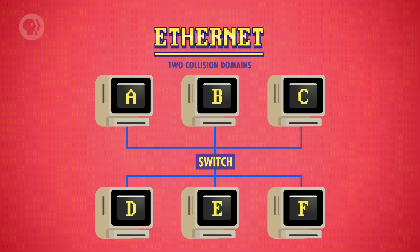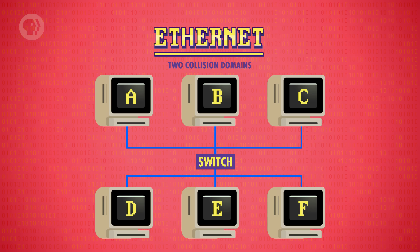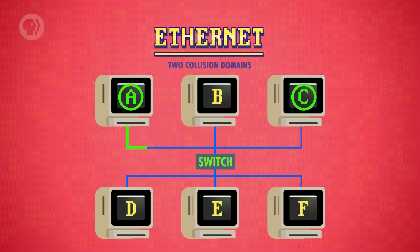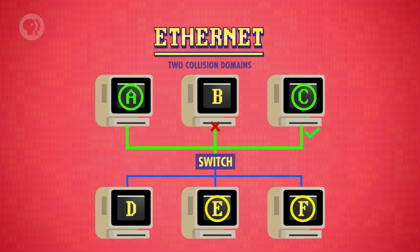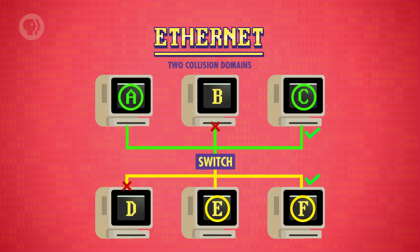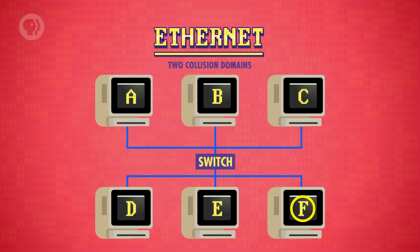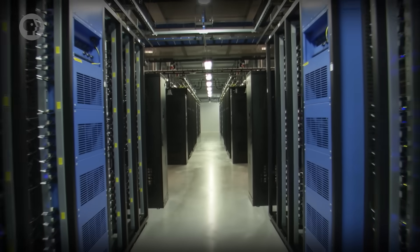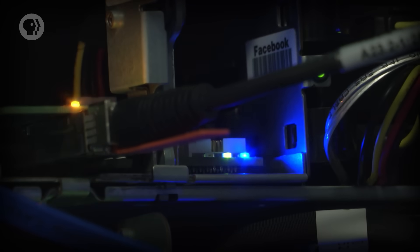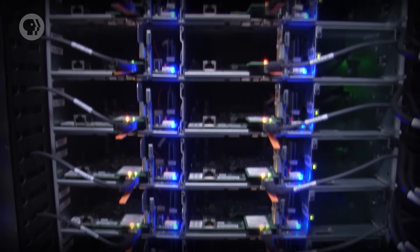The switch sits between two smaller networks, and only passes data between them if necessary. It does this by keeping a list of what MAC addresses are on what side of the network. So if A wants to transmit to C, the switch doesn't forward the data to the other network. This means if E wants to transmit to F at the same time, the network is wide open, and two transmissions can happen at once. But if F wants to send data to A, then the switch passes it through, and the two networks are both briefly occupied. This is essentially how big computer networks are constructed, including the biggest one of all — the Internet — which literally interconnects a bunch of smaller networks, allowing inter-network communication.